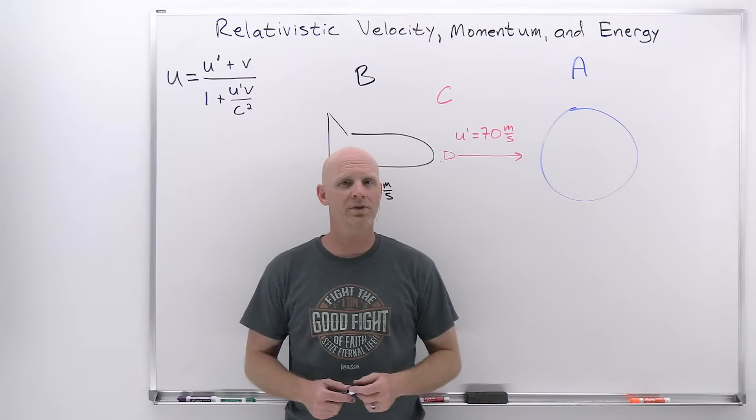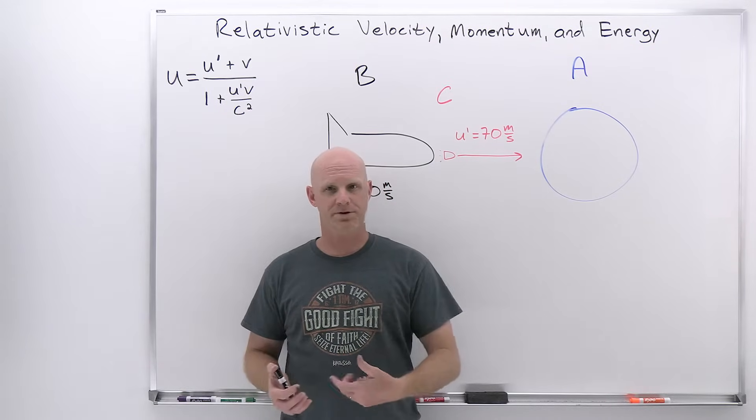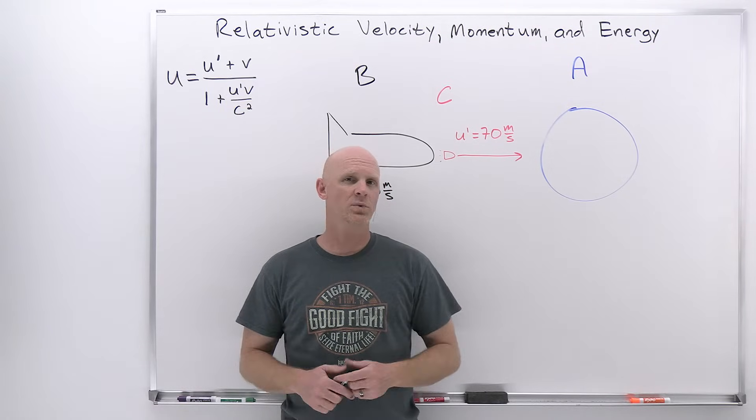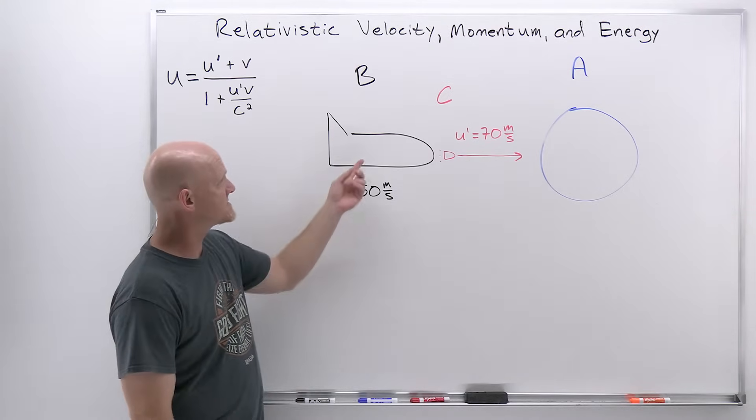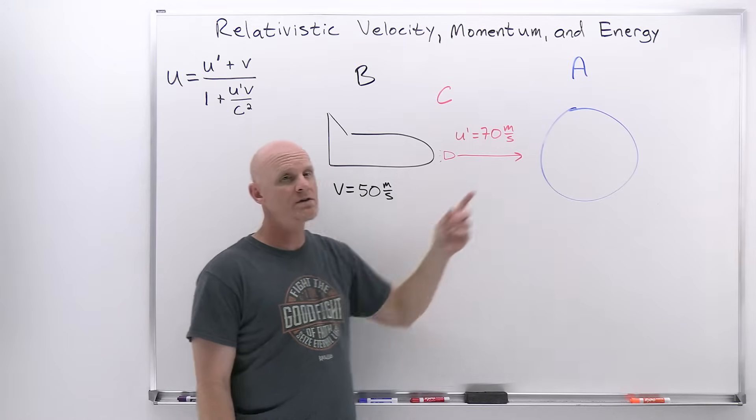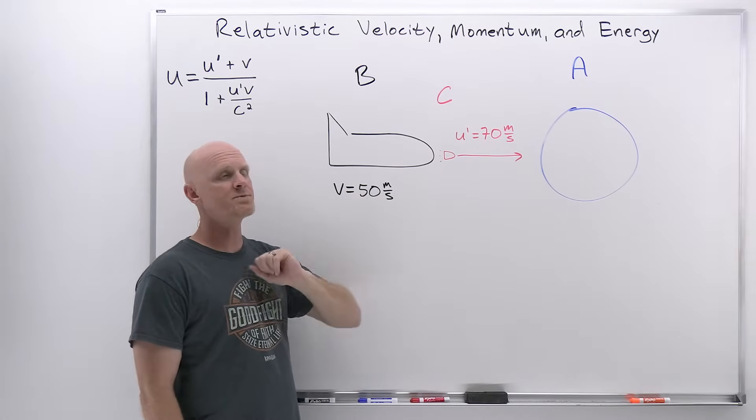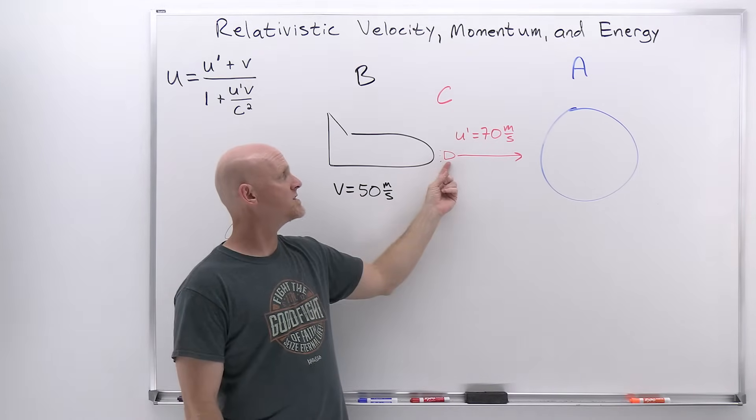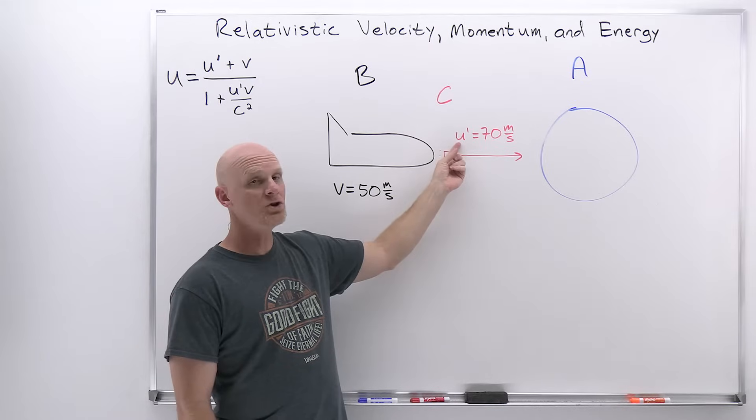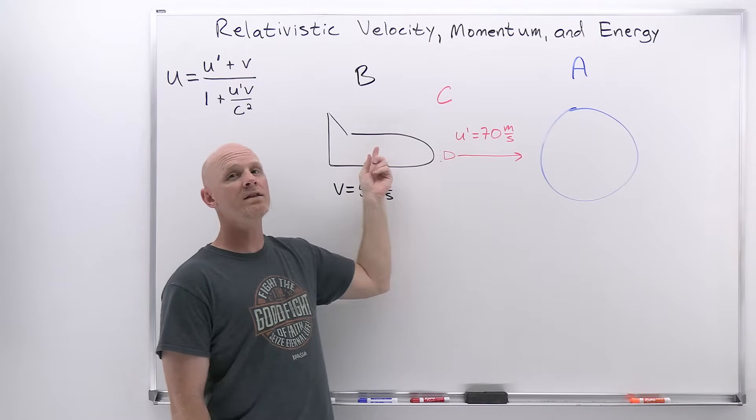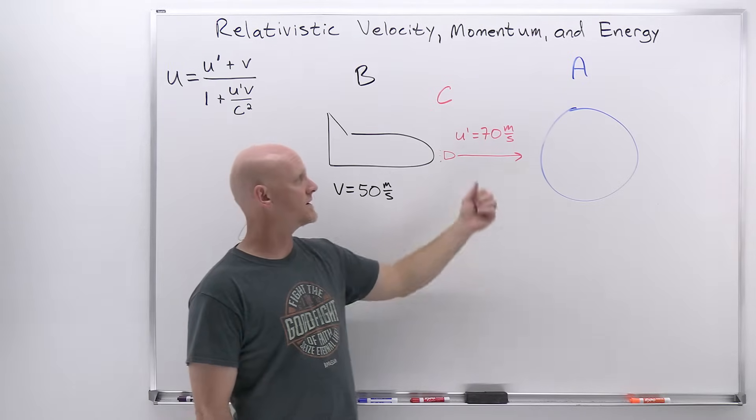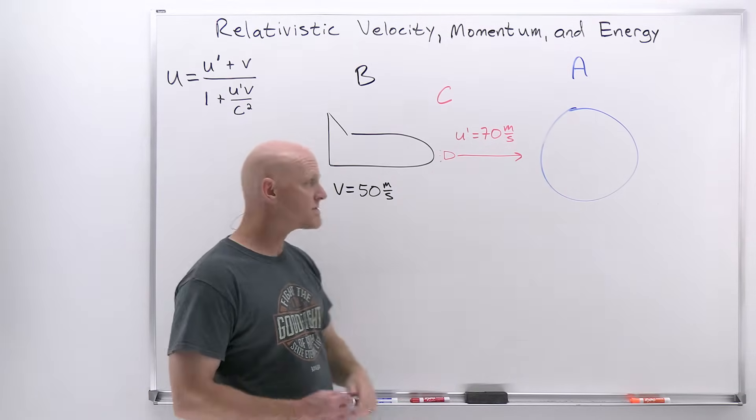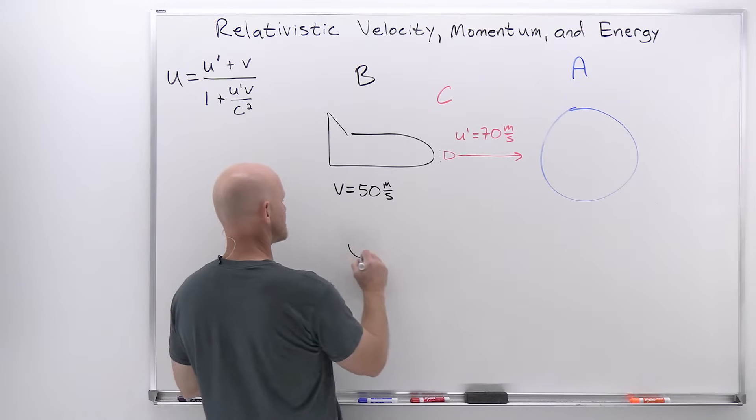Before we take a look at relative velocity from our new relativistic perspective, let's remind ourselves what it looked like from our classical Galilean perspective. We're going to have a spacecraft traveling towards the Earth with a velocity V equals 50 meters per second. It's going to fire a projectile with a velocity U' of 70 meters per second relative to the spacecraft. The question is, what's going to be the velocity of the projectile relative to the Earth?